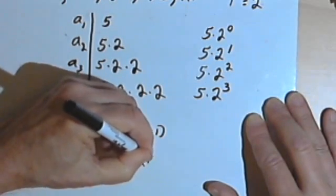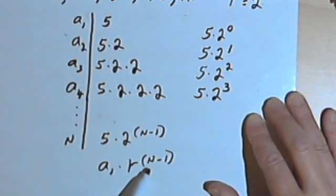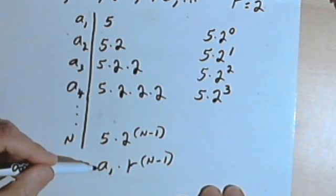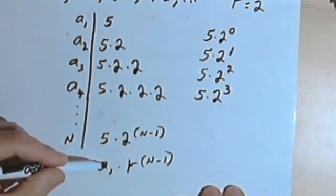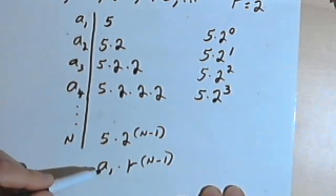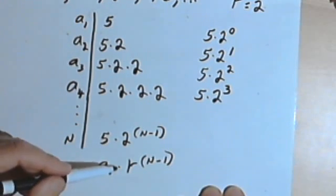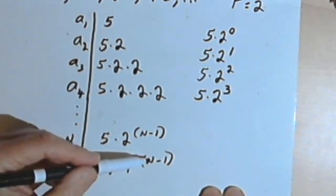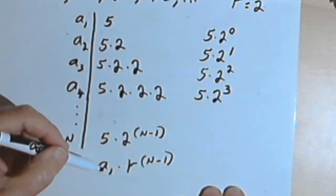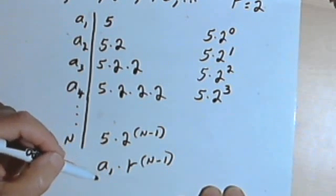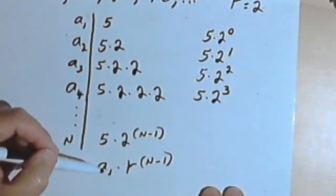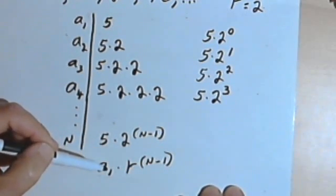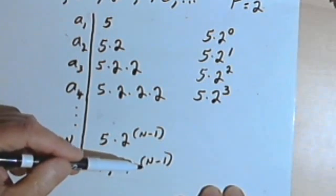the letter we're using for the common ratio. And then the exponent is going to be n minus 1, the number of the term we want, minus 1. So a general rule for finding the nth term of a geometric sequence would be a sub 1, the first term, times r, the common ratio, raised to the power n minus 1. So if you're given a geometric sequence and you're asked to find some term, you can just plug the numbers you have for the sequence into this general formula and you'll get that term.